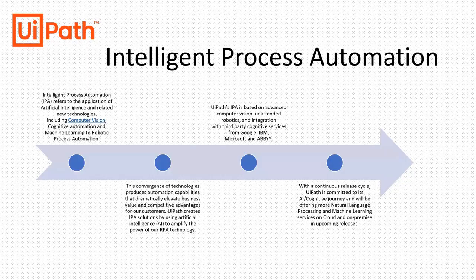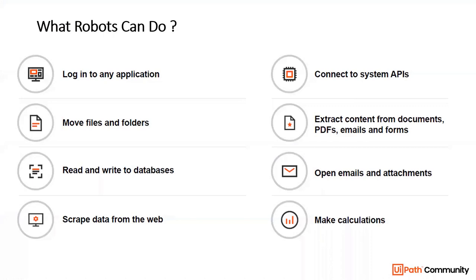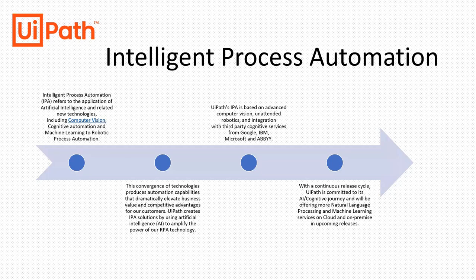There is more to what robots can do. That is where something called Intelligent Process Automation comes in. Up to this point, process automation is just doing actions the human does in a repetitive way. As soon as we add the word 'intelligent,' robots become capable of doing something extra. UiPath has a full suite for Intelligent Process Automation using technologies such as artificial intelligence, computer vision, and cognitive automation, which can be added on top of your existing RPA projects.